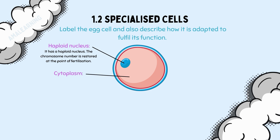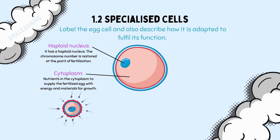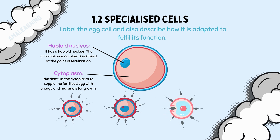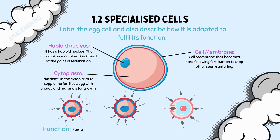The cytoplasm is full of nutrients, and this supplies the fertilised egg with energy and materials for growth. Once the sperm cell reaches the jelly coat — which is the outer lining — it releases the acrosomal enzymes, which like chemical scissors start to cut away the cell membrane. However, once one sperm cell enters, the cell membrane becomes hard. This prevents any more sperm cells from entering the egg cell, ensuring that only one sperm cell fertilises the egg.